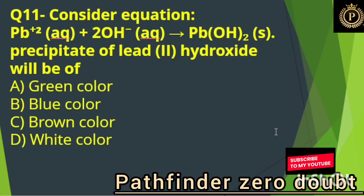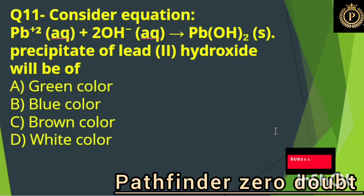Consider the equation: Option D, the precipitate of hydroxide will be white in color.